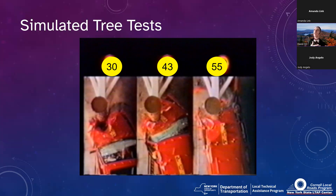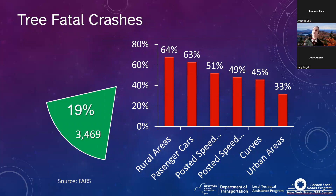Tree crashes occur in both rural and urban areas — two-thirds are rural, but that means one-third are urban. Passenger cars account for about two-thirds, but trucks and motorcycles contribute too. Posted speed matters, but only about half of tree fatalities occur at 55 mph — even at relatively low speeds, hitting a tree is not a good thing. Curves are a risk factor. Urban areas with trees in the wrong location are surprisingly dangerous.